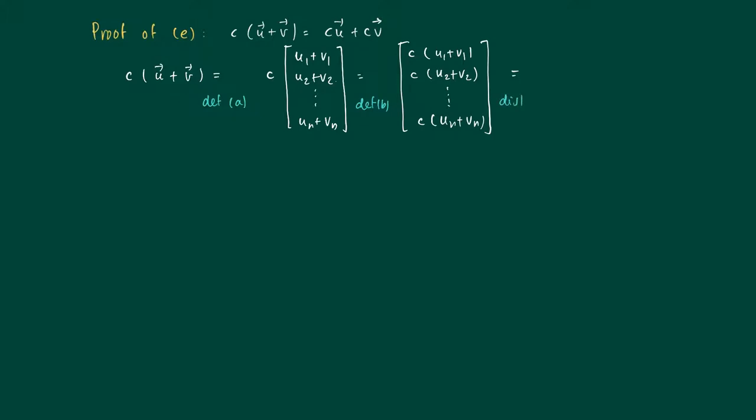So now we use the distributivity of the real numbers. So c times (u1 plus v1) equals c u1 plus c v1. Since these are all real numbers, we proceed as follows. For the second coordinate we have the same and we end up with c times un plus c vn.